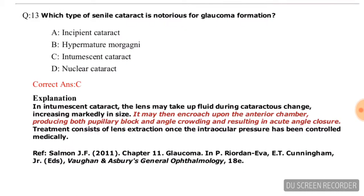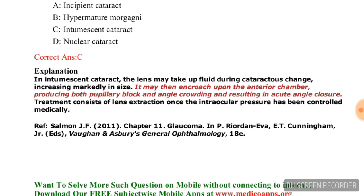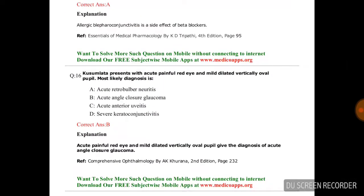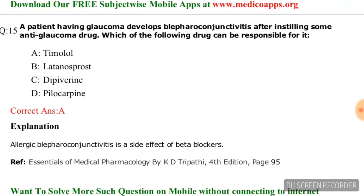Question number eleven: Which type of senile cataract is notorious for glaucoma formation? Options are incipient cataract, hypermature morgagnian cataract, intumescent cataract, and nuclear cataract. The correct answer is intumescent cataract, that is option number C.